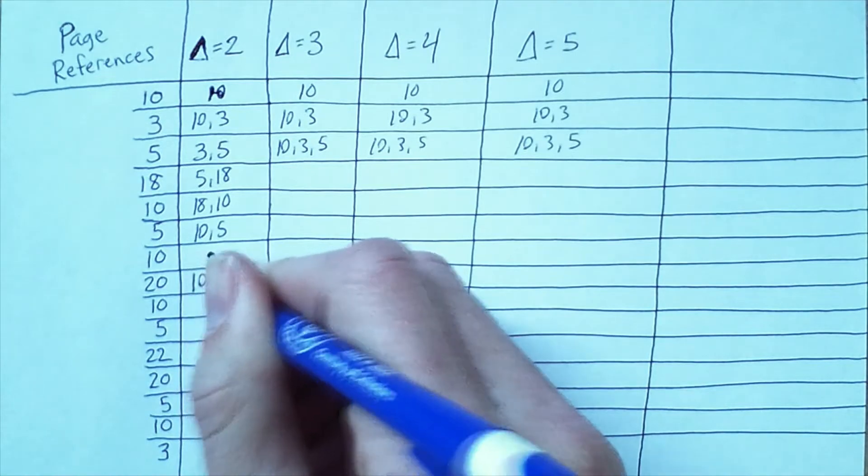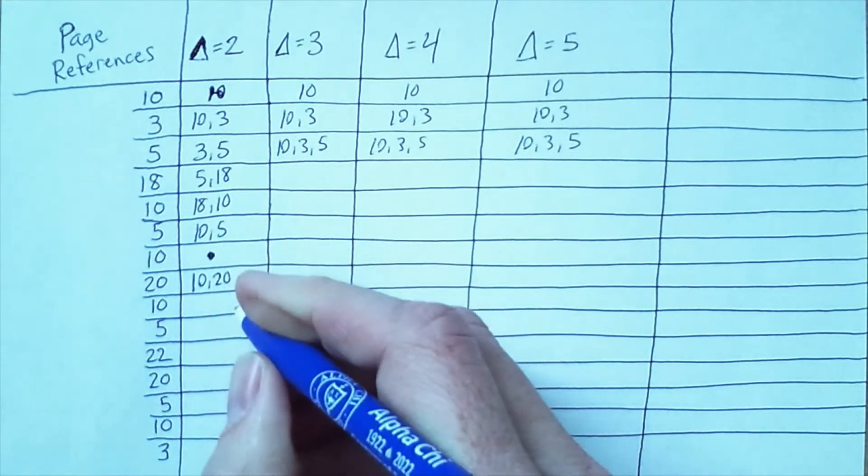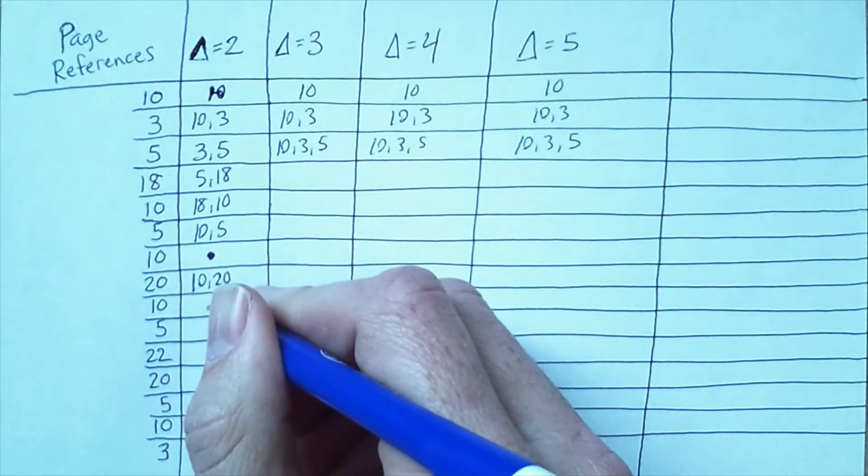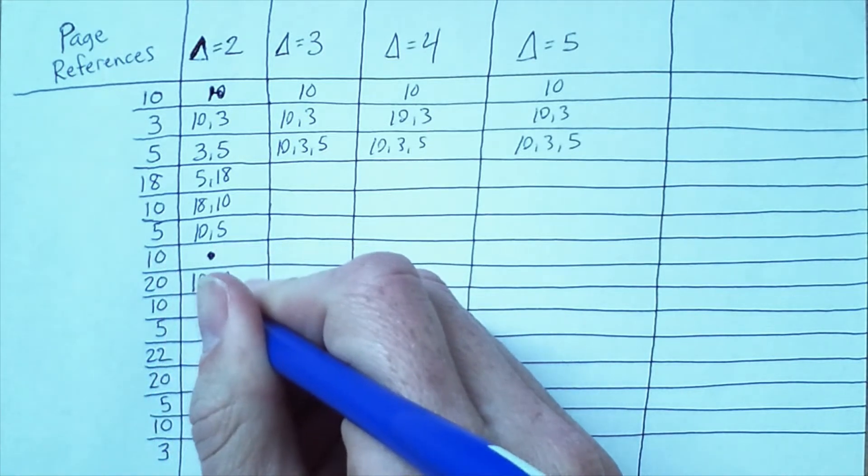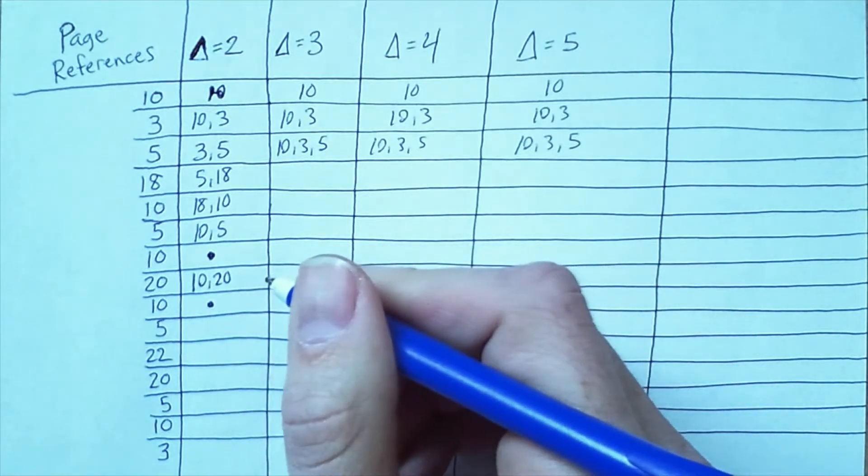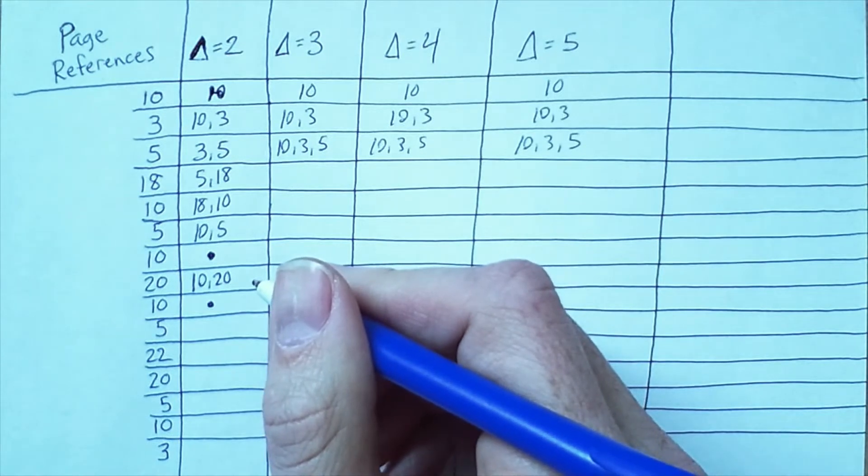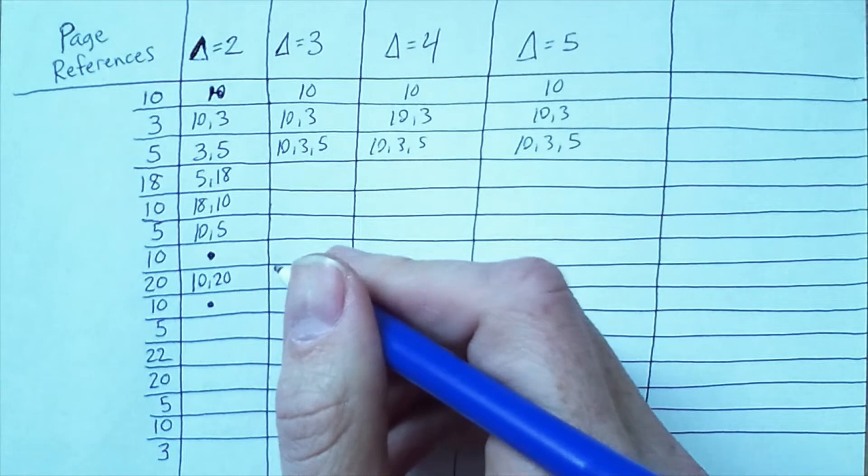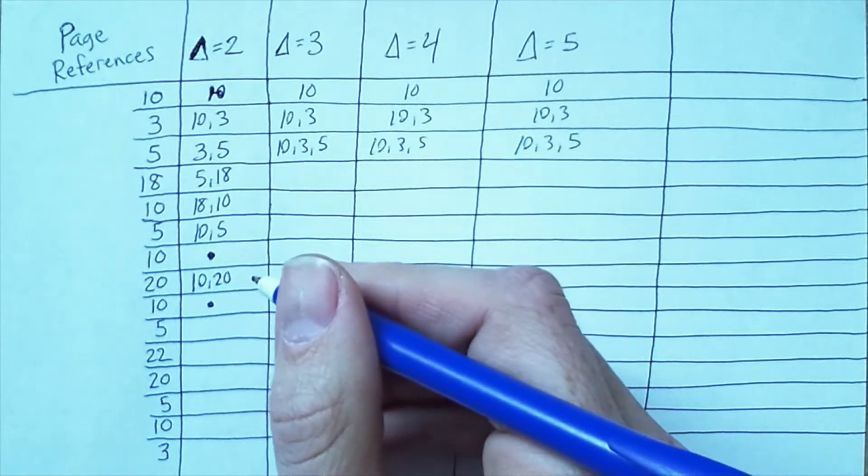So we can still store all three pages that we've referenced so far. And then I'll just go forward in the twos column here for a while, and you can see how things change. We have 5 and 18, and then 18 and then 10, and then 5.